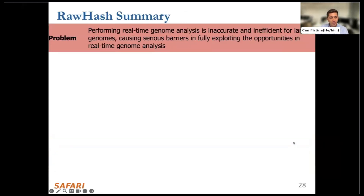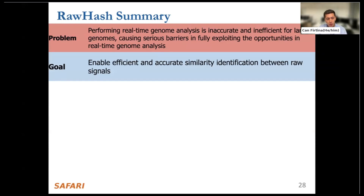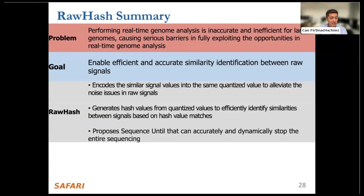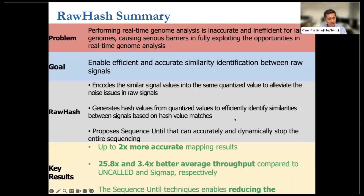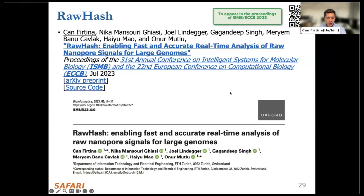Let me quickly conclude. Performing real-time genome analysis is inaccurate and inefficient for large genomes, and our goal is to make real-time analysis for large genomes efficient and accurate. To achieve this, RawHash quantizes similar signal values into the same quantized value to mitigate noise issues in raw signals, then generates hash values from quantized values to efficiently identify similarities between signals based on hash value matches. We also propose Sequence Until, which can accurately and dynamically stop the entire sequencing. We provide significantly more accurate results and better average throughput compared to Uncalled and Sigmap, and Sequence Until enables reducing sequencing time and cost. RawHash will appear in the proceedings of ISMB-ECCB this year and will be presented at the ISMB conference next month. Source code is also available via QR code.